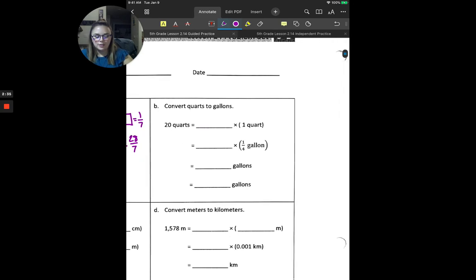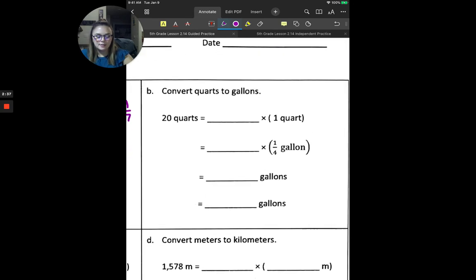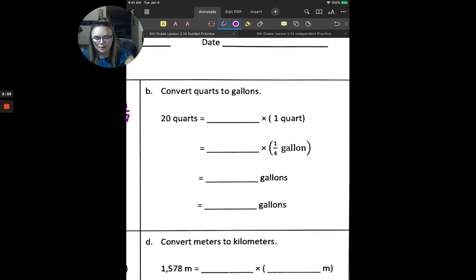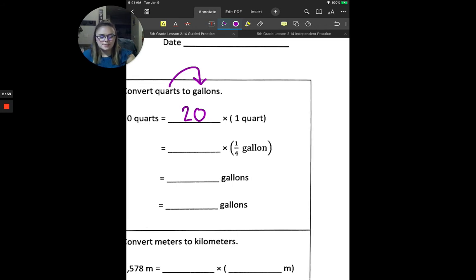Let's take a look at B. So B, we are doing quarts to gallons. So we're looking at quarts to gallons for this one. We're looking at 20 quarts. So we can think of 20 quarts as 20 times 1 quart. Since we're going from quarts to gallons, we need to figure out how much of a gallon 1 quart is.